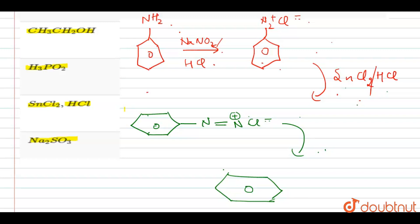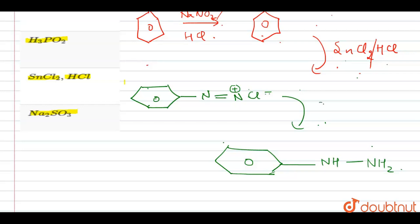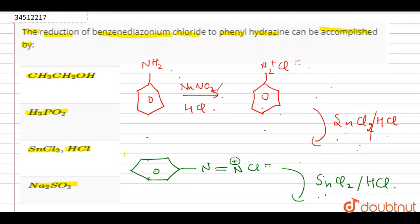And reducing this double bond by formation of this, by providing nascent hydrogen also. So formation of phenyl hydrazine takes place in presence of SnCl2 and HCl by the providing of nascent hydrogen by this reducing agent.